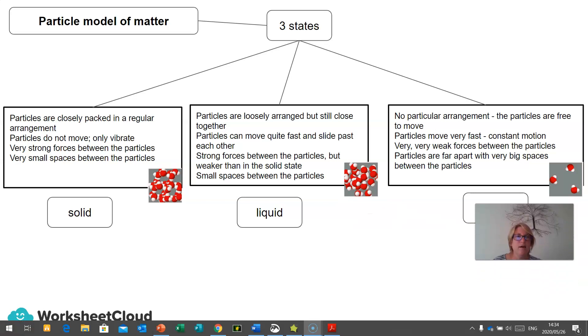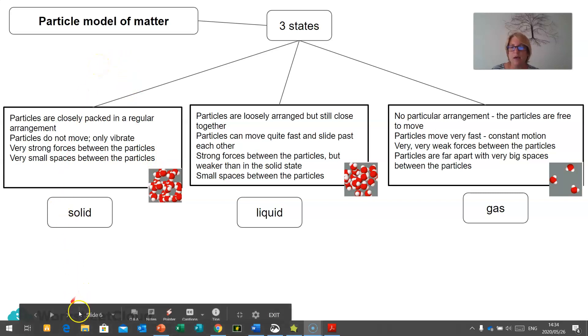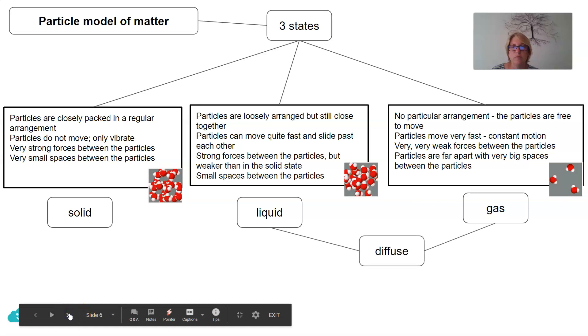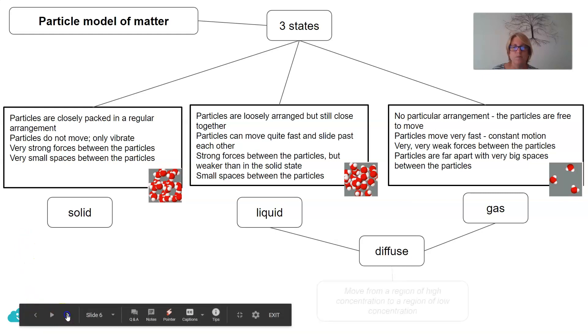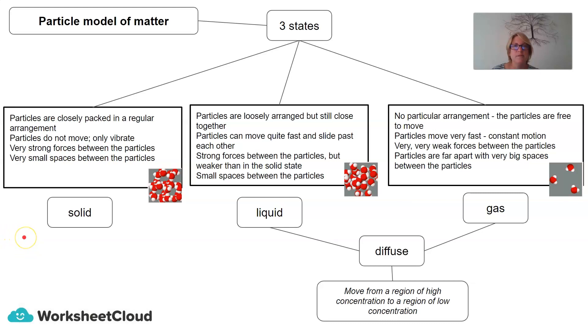So, if we stay with the three states, and we look at the descriptions of solids and liquids and gases we looked at earlier, it is also important to remember that both a liquid and a gas can diffuse. And diffusion is the movement of a substance from a region of high concentration to a region of low concentration.